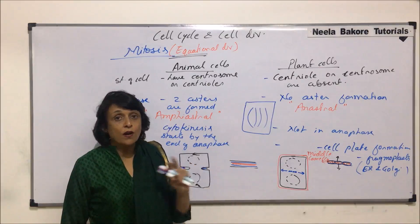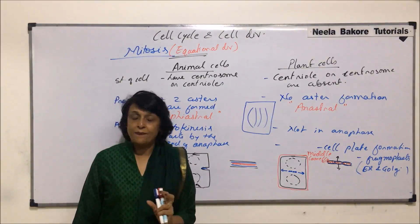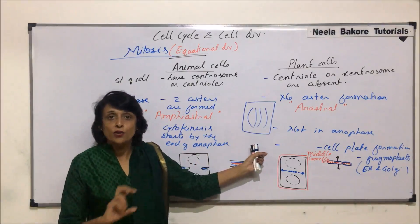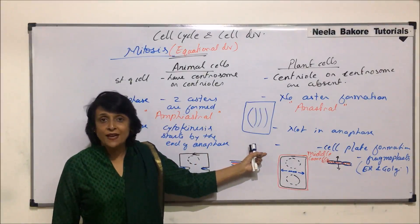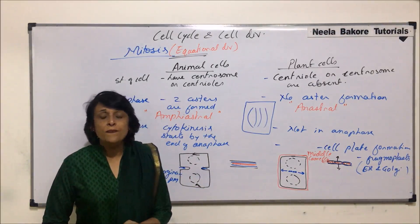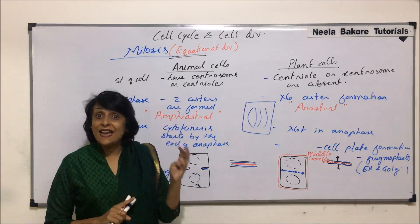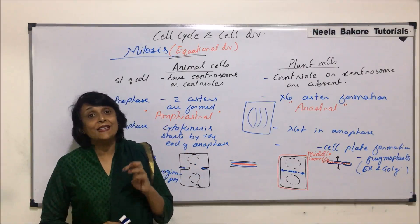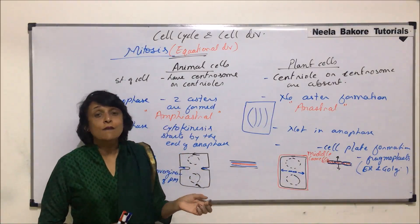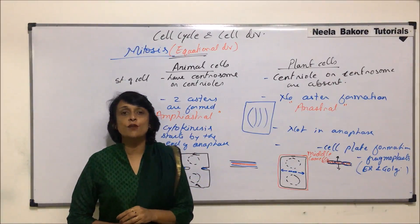These are the differences between animal and plant cells during mitotic division. We have now seen the complete process of mitosis and the comparison between animal and plant cells. In the next segments, we will discuss the types of mitotic divisions and the control or regulation of mitotic division, including uncontrolled mitotic division which results in cancer.